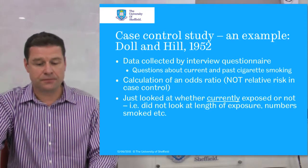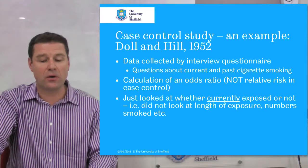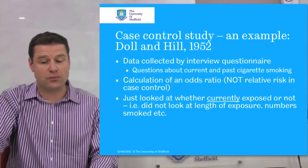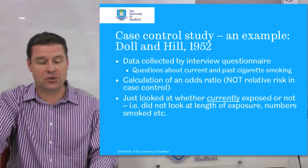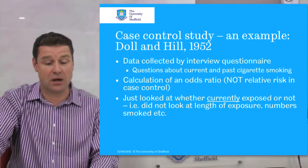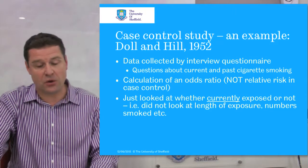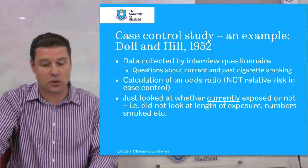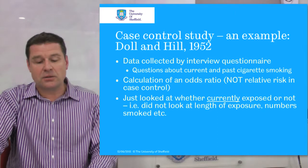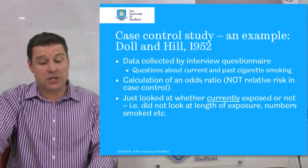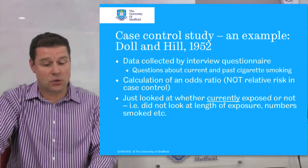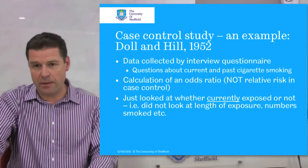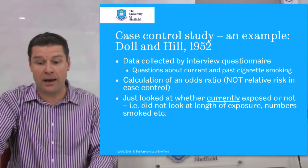They collected data by interview using a questionnaire, asking questions about current and past cigarette smoking. They then calculated an odds ratio. You can't calculate a relative risk in a case control study because you're unable to establish incidence — you're looking backwards over time and you're not certain about the temporality of the exposure to the disease. So you calculate something called the odds ratio. They only looked at whether the person was currently exposed to cigarettes or not; they didn't look at the length of exposure nor the number of cigarettes smoked. So it was a very simple case control study — remember, they knew very little at this point, it was all a hypothesis.